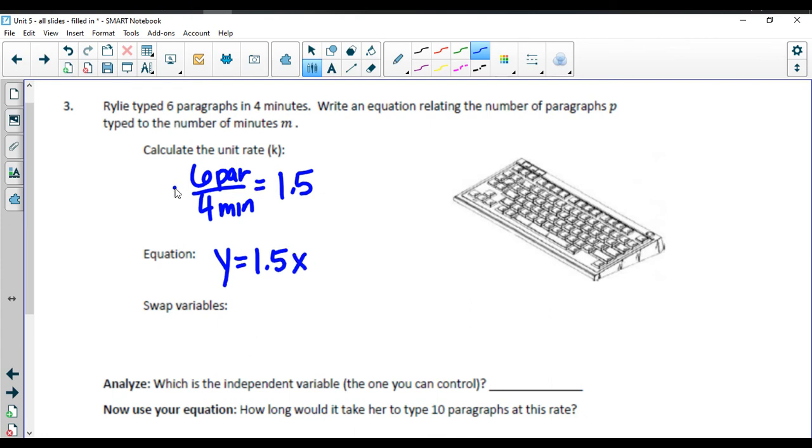Paragraphs is P, which this was also our Y divided by X. And the minutes is M, which is represented by our X initially. So we're going to swap out our variables. Instead of Y, we have paragraphs. And instead of X, we have M for minutes.